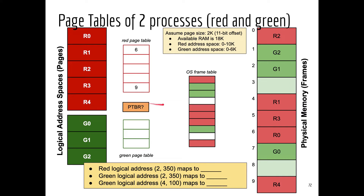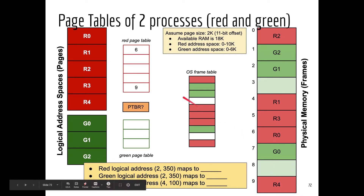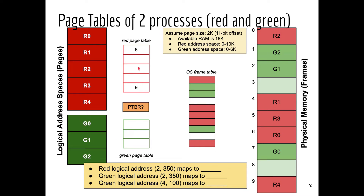Although we see two processes here, the diagram shows only one page table base register — because on real hardware, the CPU has only one page table base register. On a context switch, the page table base register must be re-initialized to point to either the page table of Red or Green, depending on which one is about to run. The two page tables shown are incomplete — you should be able to fill in the missing entries using the RAM layout and the layout of the two processes.